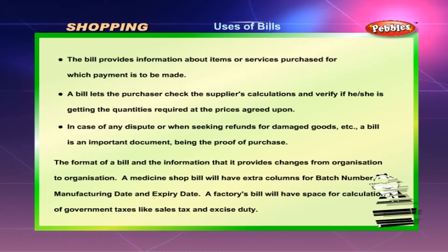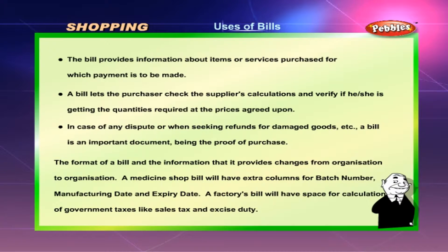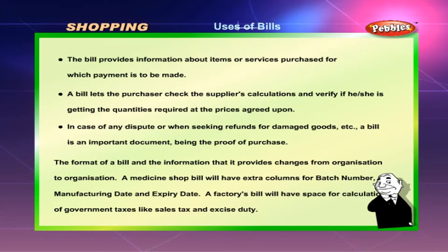Uses of a bill: The bill provides information about items or services purchased for which payment is to be made. A bill lets the purchaser check the supplier's calculations and verify if he or she is getting the quantities required at the prices agreed upon. In case of any dispute or when seeking refunds for damaged goods, a bill is an important document being the proof of purchase.